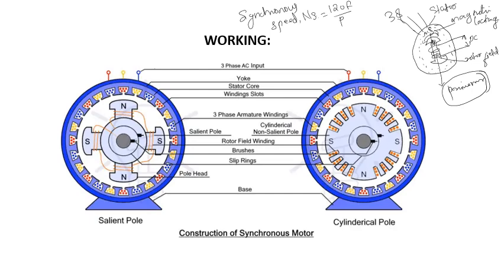To make the motor self-starting, we provide some external support. If we provide a prime mover to the rotor and make it rotate, when the motor attains a particular speed, at a particular instant, the opposite poles of both magnetic fields get locked and the rotor starts to rotate at synchronous speed. The working principle of a synchronous motor is the interaction of stator and rotor magnetic fields, or in other words, the magnetic locking of the stator and rotor magnetic fields creates the rotating movement.